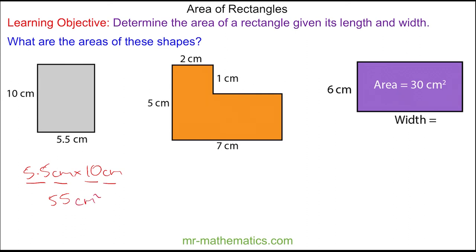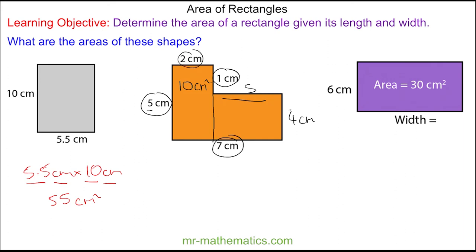For the orange shape I'm going to break it up into two rectangles. This one is 2 times 5, which is 10 centimeters squared. This length is the difference between 5 and 1, which is 4 centimeters, and this length is the difference between 7 and 2, which is 5. So this rectangle will be 20 centimeters squared. We add them together and get 30 centimeters squared in total.